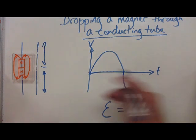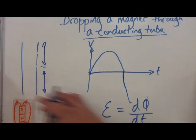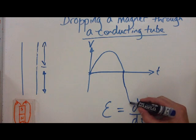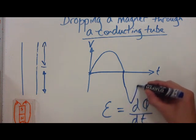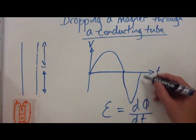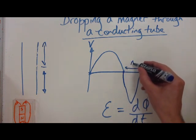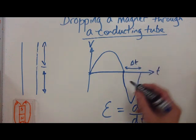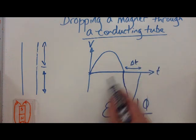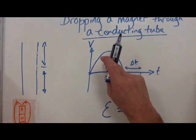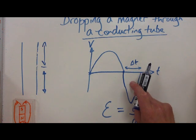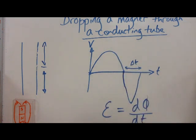It passes through the bottom half of the tube much faster than it passes through the top, which means this time interval is much smaller than the earlier one. It's interesting to note that the area of both peaks should be identical, as they relate to the total number of field lines that have been cut.